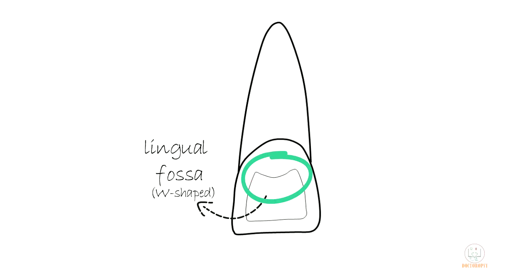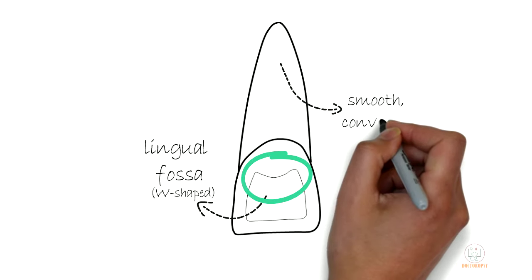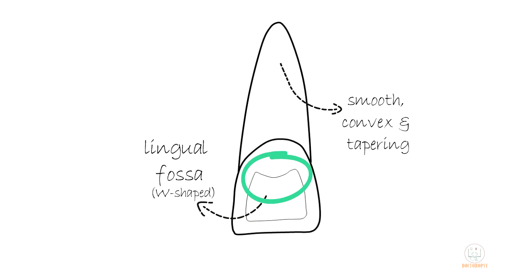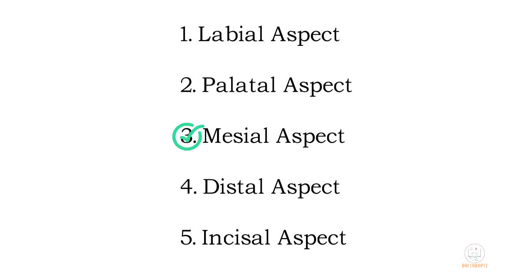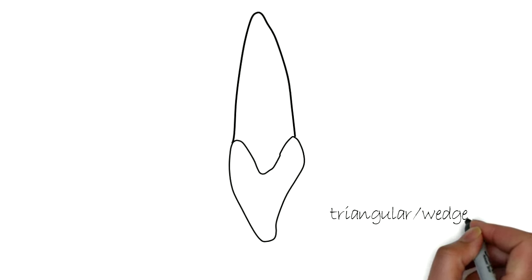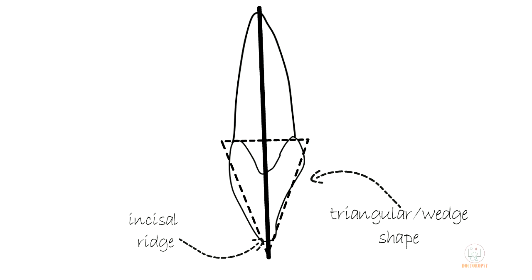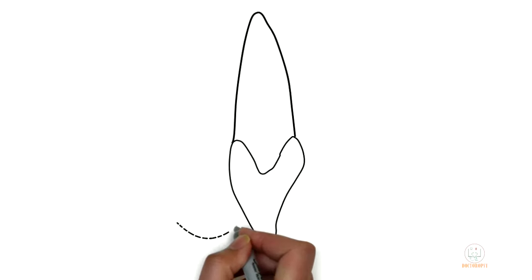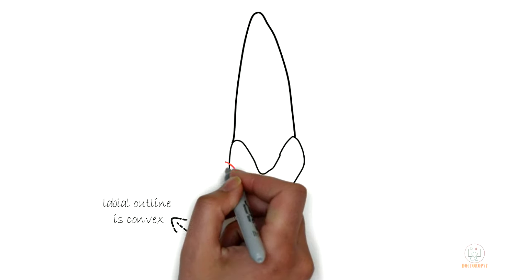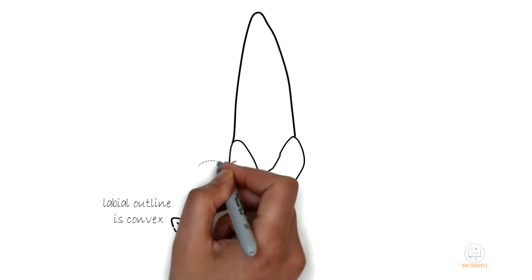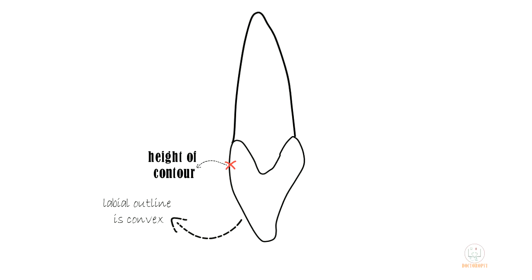In the middle of these ridges and cingulum is a smooth concavity called the lingual fossa. The lingual fossa in the maxillary central incisor is said to be W-shaped, because of the intrusion of the cingulum into the cervical border of the lingual fossa. The root appears smooth, convex, and tapering. Coming to the proximal aspects — from the mesial aspect, the crown is triangular or wedge-shaped with its base at the cervix. The incisal ridge lies at the midline axis of the tooth. The labial outline is convex with its maximum convexity at the level of the cingulum in the cervical third.